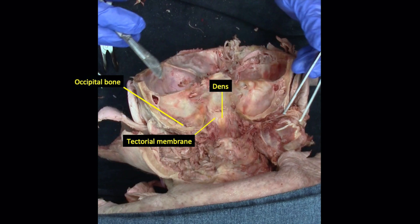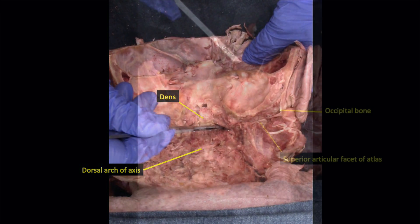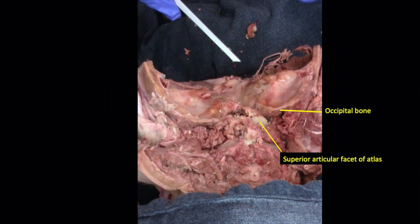Once this step is taken, it is possible to rotate the head freely. The next step requires you to insert a scalpel in between the atlas and the occipital condyles. The scalpel should insert relatively easily if you have the correct spot. After which, the anterior arch of the atlas can be forced free. The superior articular facet of the atlas is clearly visible in the image.